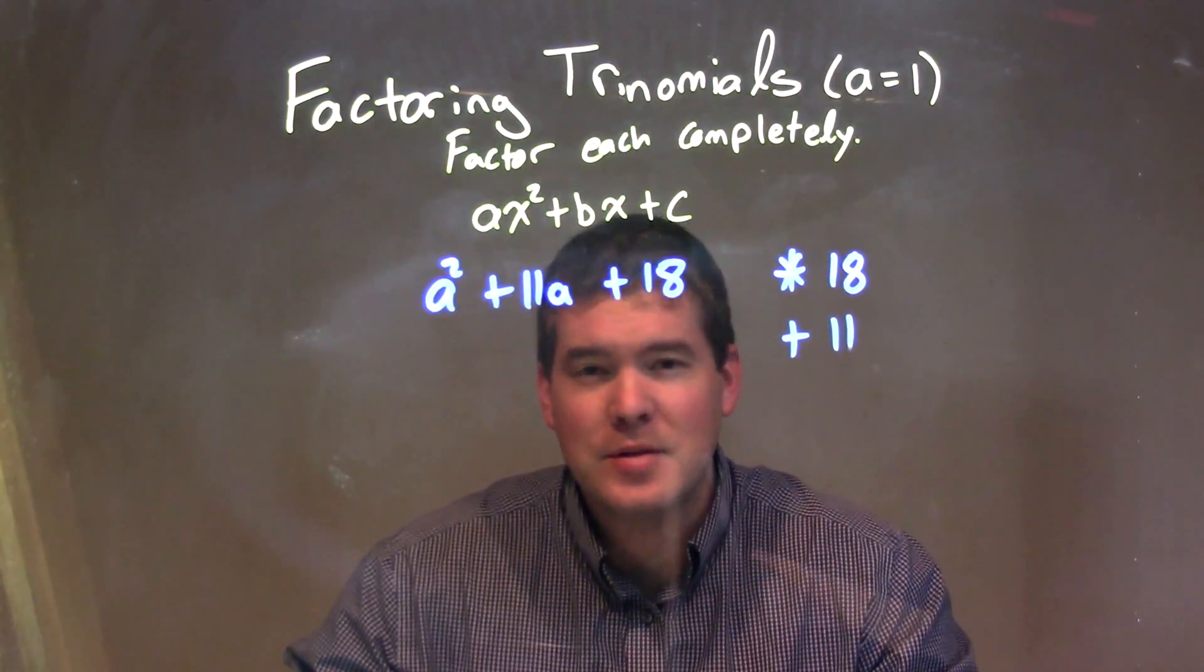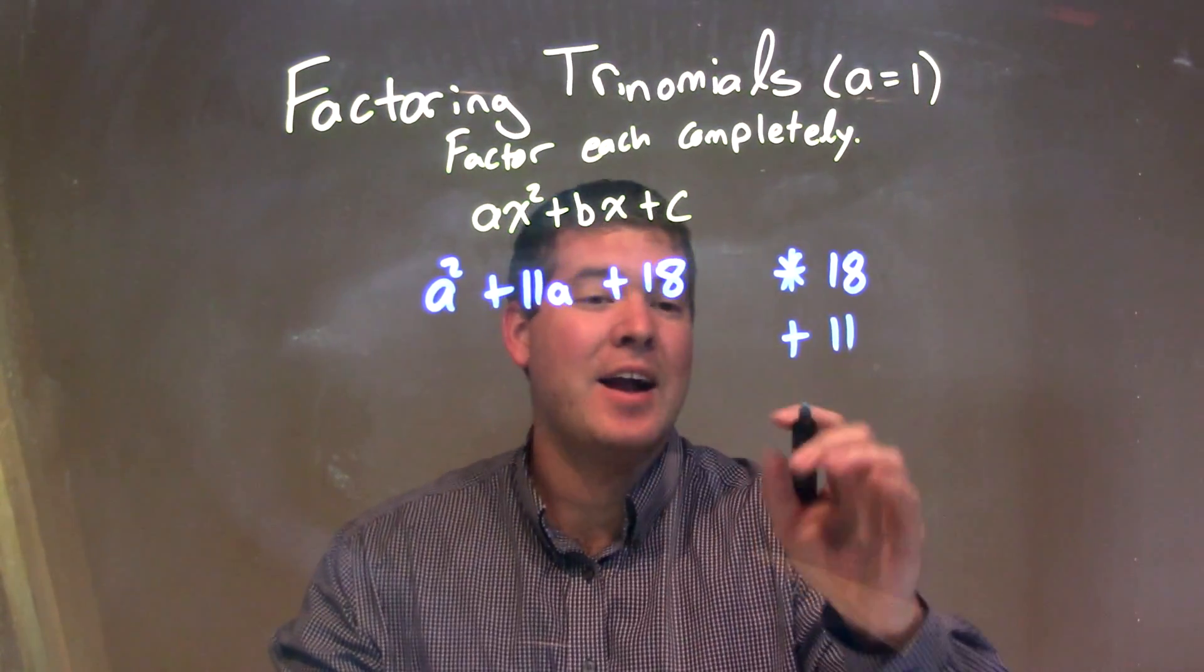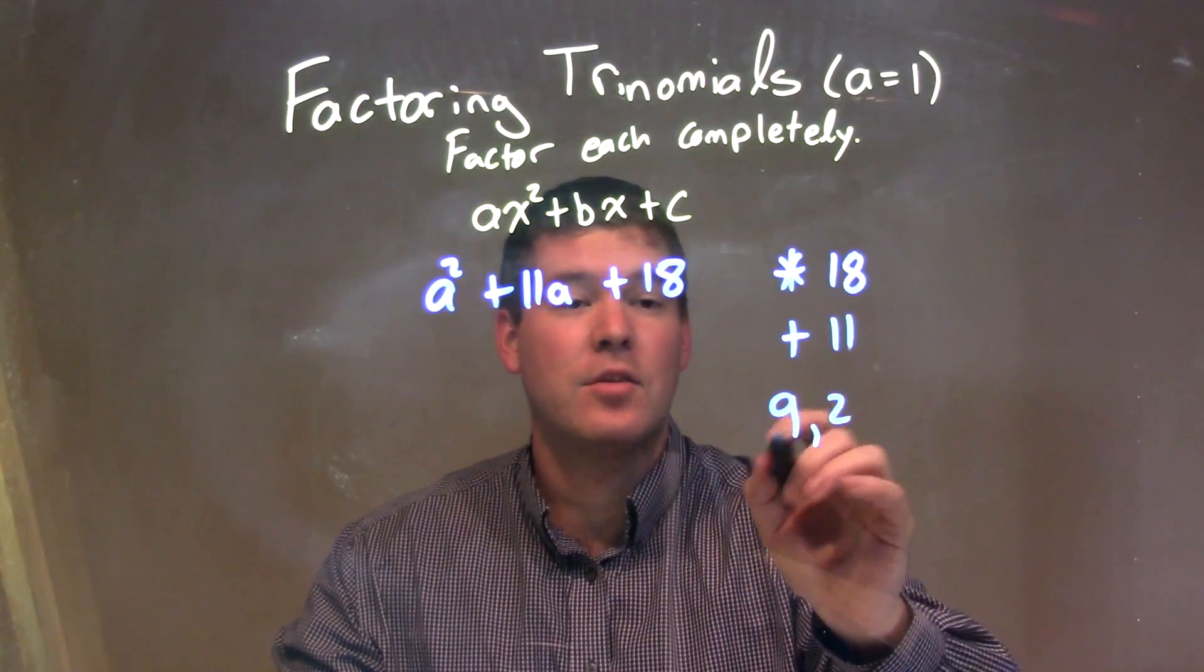So when I think about the two numbers that multiply to be 18 and add to be 11, I'm thinking 9 and 2. 9 times 2 is 18, and 9 plus 2 is 11.